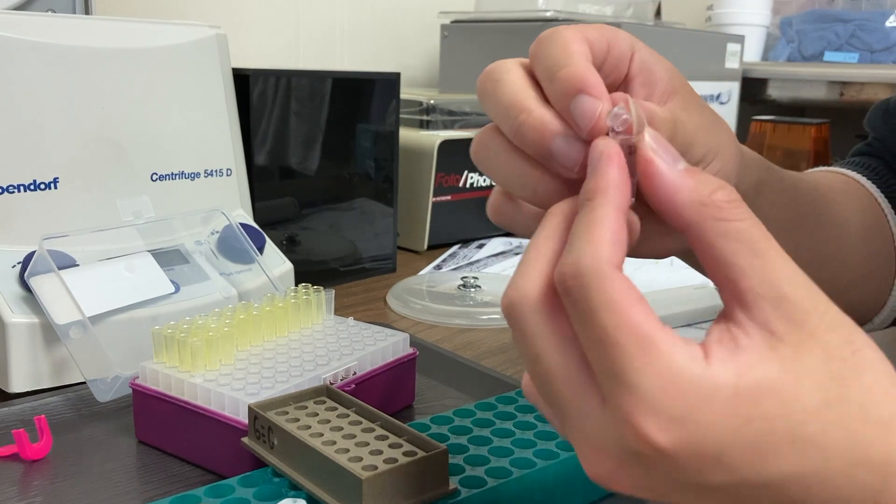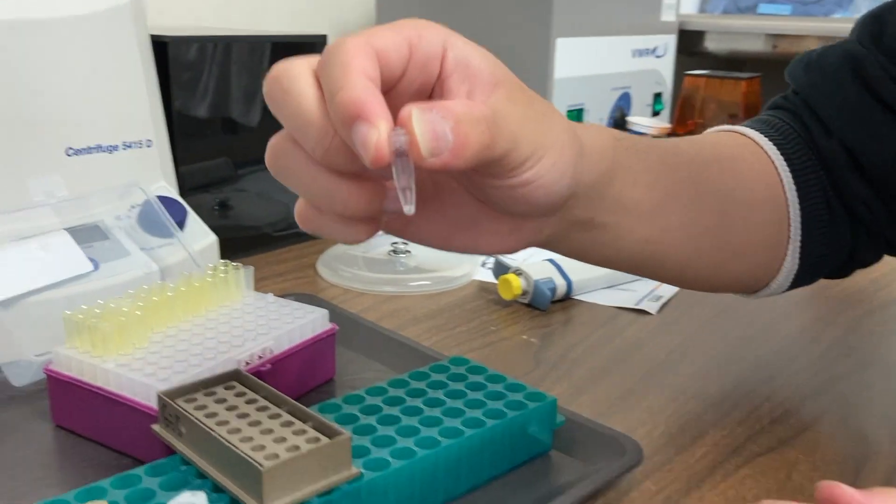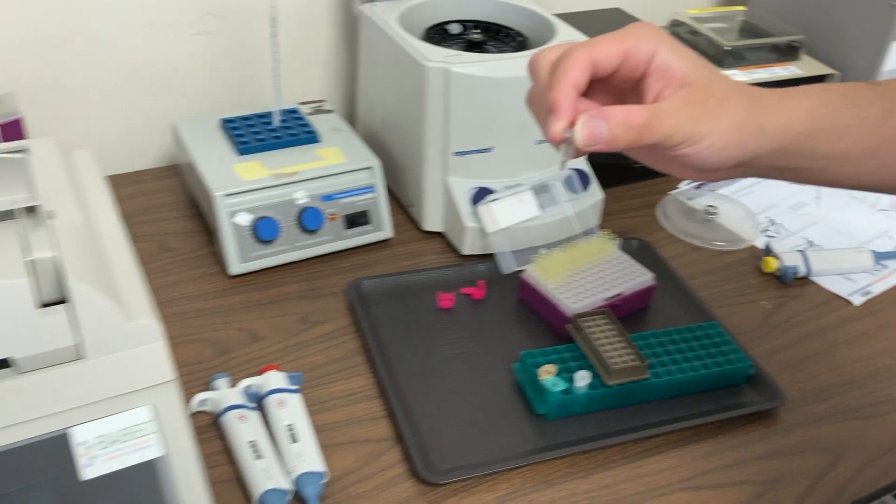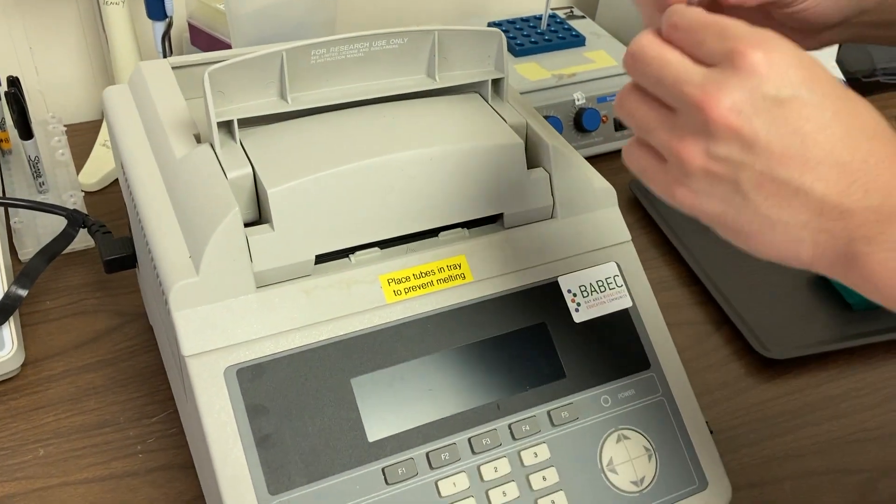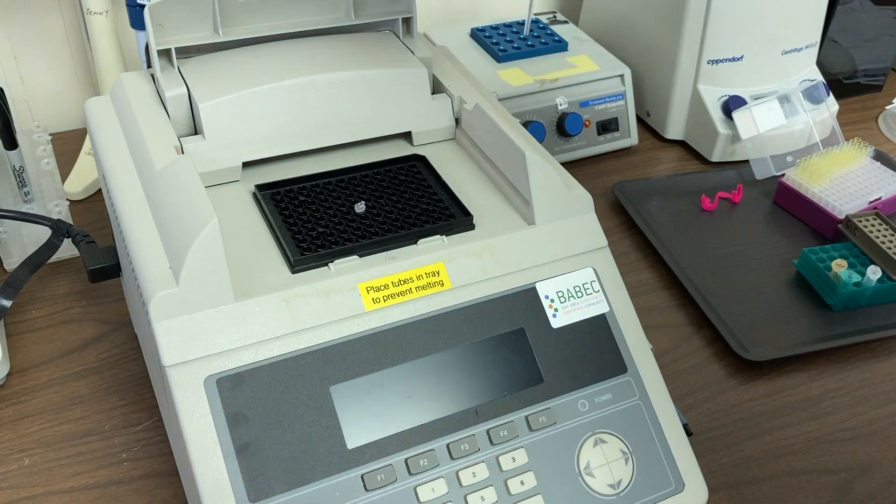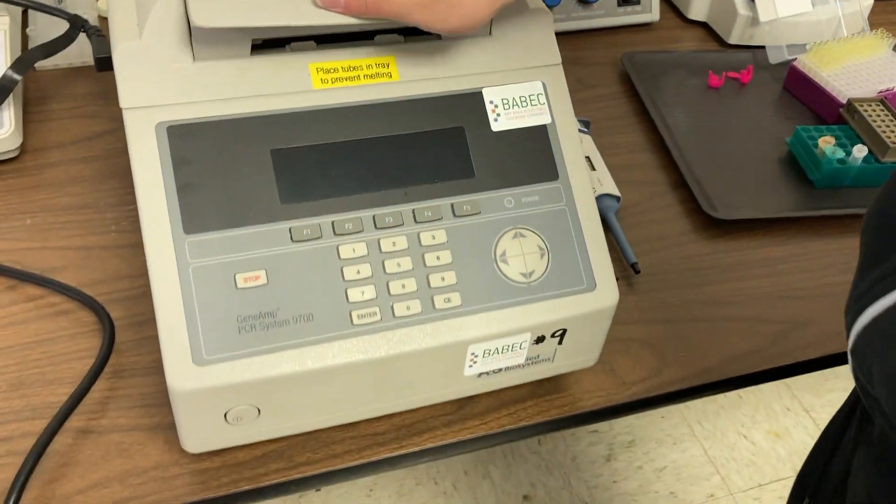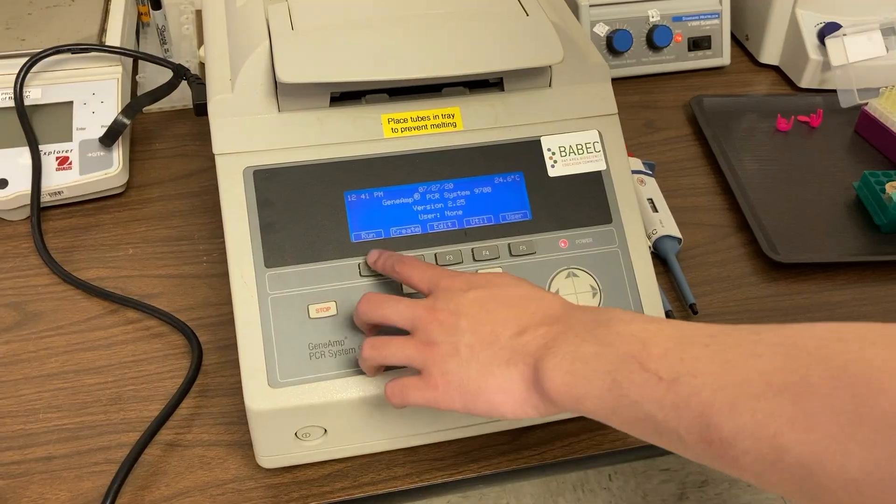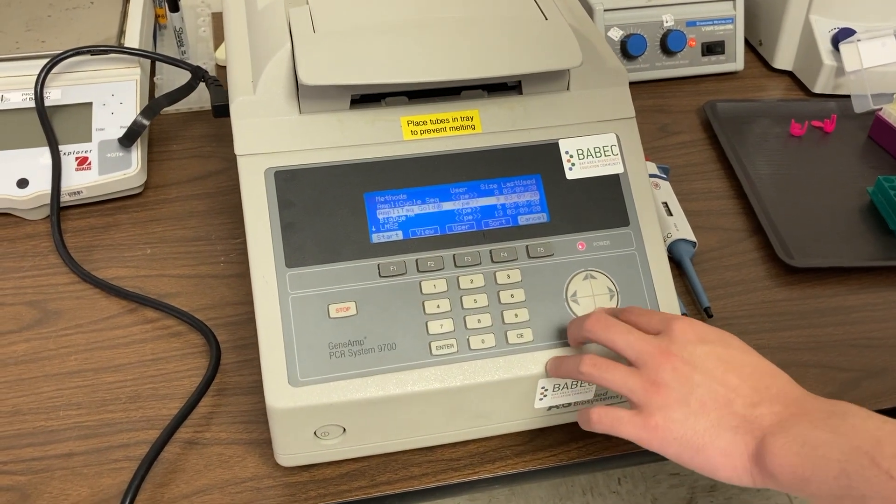And now your reaction is ready for the thermal cycler. The thermal cycler is the machine where the polymerase chain reaction, or PCR, takes place. You may have read in the reading that the thermal cycler can increase its temperature very quickly to a specific temperature. It can also cool down very quickly to a specific temperature.